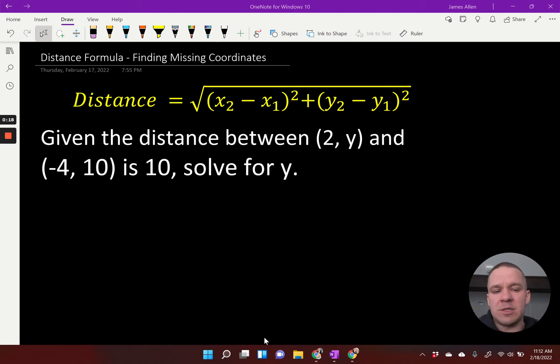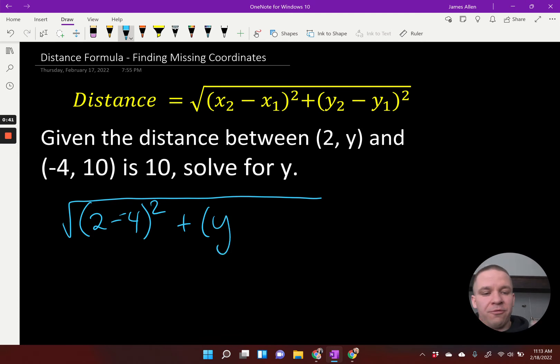So I know the distance between these two points is 10. What I need to do is first set up my distance formula. Now you can pick which coordinate you want to start with, whether that's the (2, y) or the (-4, 10). I'm going to choose the (2, y) because when I start plugging things in, I got 2 minus -4 squared plus y minus 10. That's why I picked that coordinate to go first, because that way my y is positive. I don't want to deal with a negative sign in front of my variable. It just seems like a place to make a mistake. All that is going to equal 10.